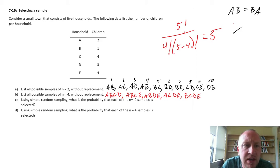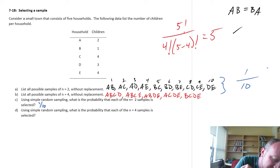Part C: Using simple random sampling, what's the probability that each of the n equals 2 samples is selected? I have 10 possible samples and each one can be drawn at random with equal probability. So the probability here is simply 1/10. There's a 1 in 10 chance that any one of these samples of size 2 will be drawn from that population of 5 elements.